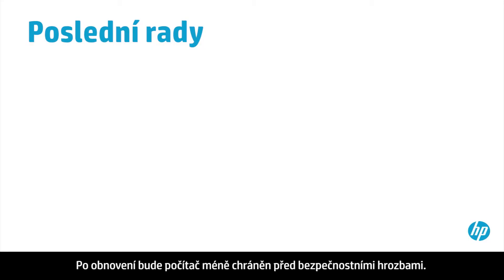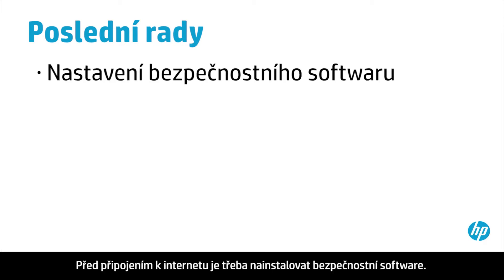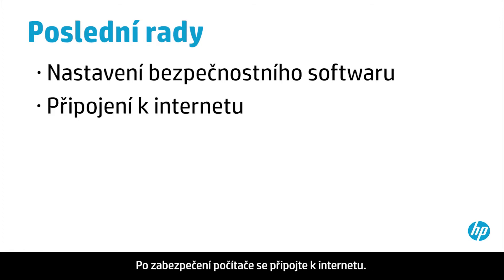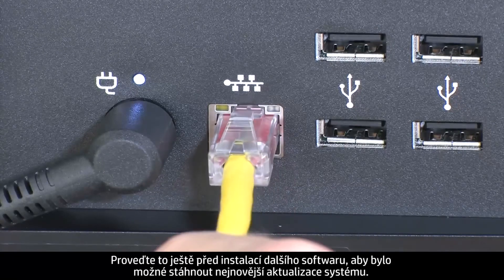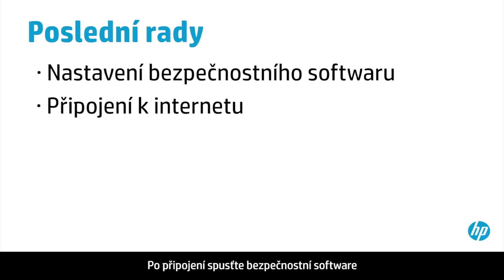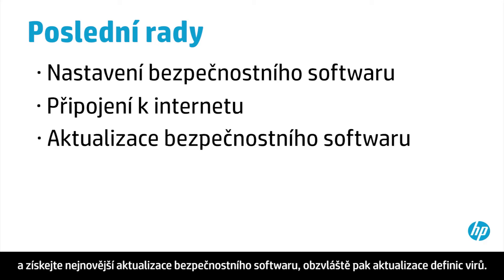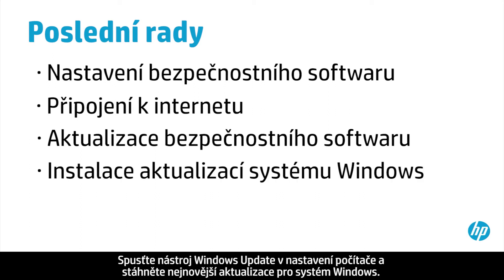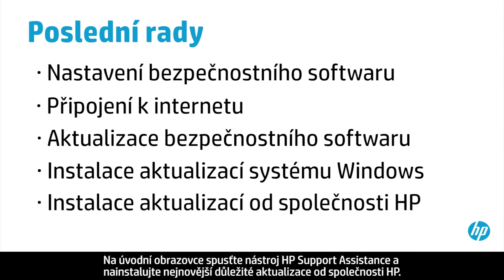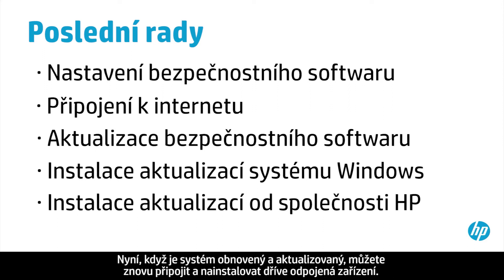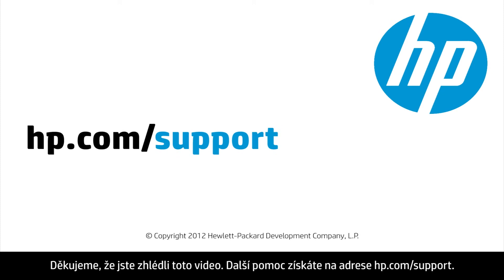After recovery, your computer is more vulnerable to security threats. Make sure you have security software installed before connecting to the Internet. Once your computer is secure, connect to the Internet before installing other software in order to get the latest updates to your system. Open your security software and get the latest updates, especially updates to virus definitions. Open the Windows Update tool in PC Settings to get the latest updates for Windows. Open HP Support Assistant on the Start screen to install the latest important updates from HP. Now that your system has been recovered and updated, you can reconnect and install devices that were unplugged previously. Thank you for viewing this video. For more help, go to hp.com/support.